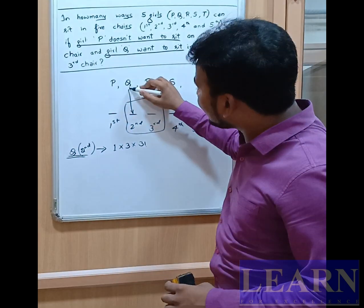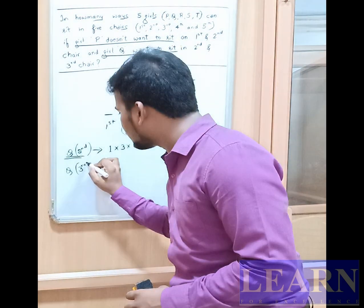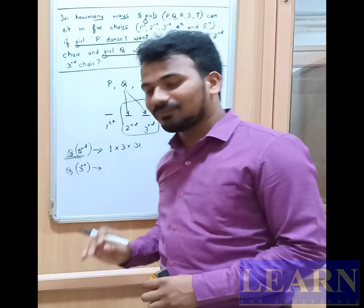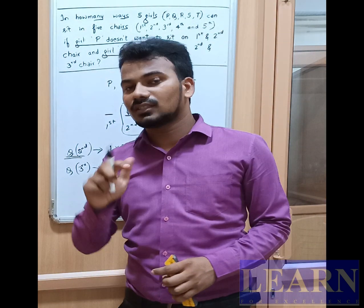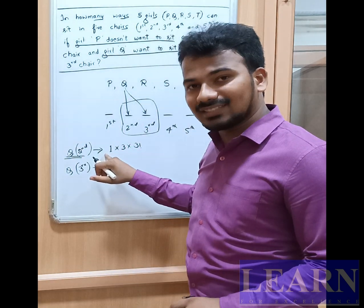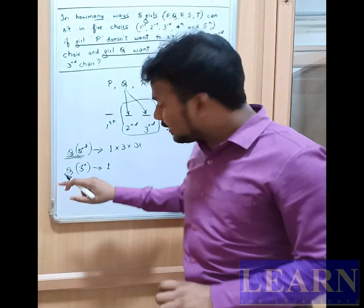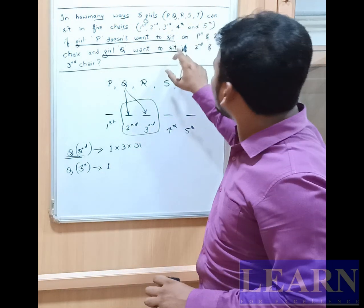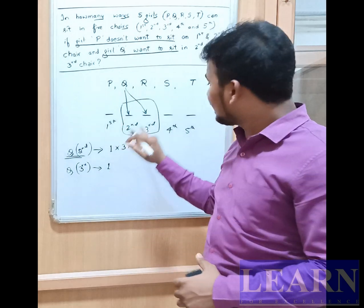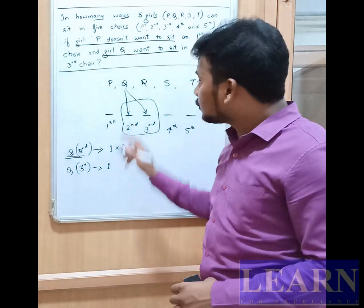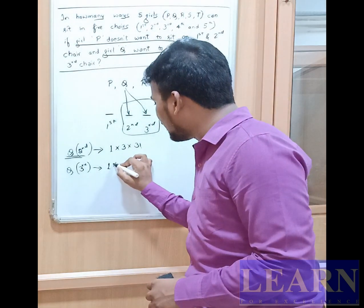Now Case 2: assume Q sits in the third chair. There is only one possibility for Q here. Now for P — P cannot sit in the first chair, cannot sit in the second chair, and cannot sit in the third chair since Q is already there. So P can only sit in the fourth or fifth seat, giving 2 possible ways for P.